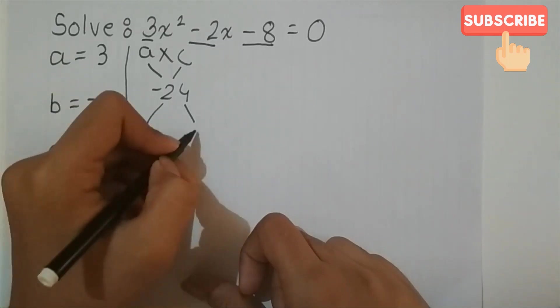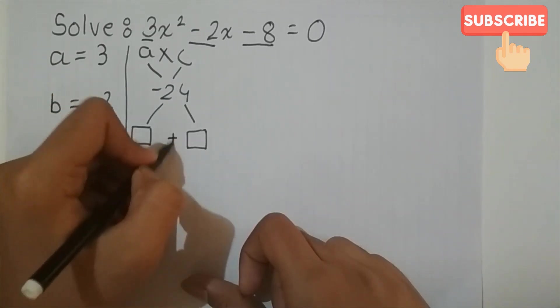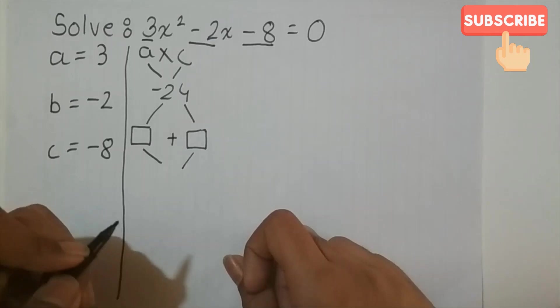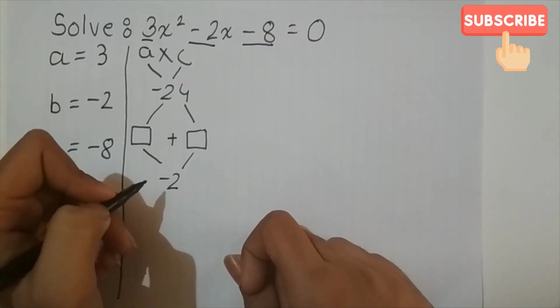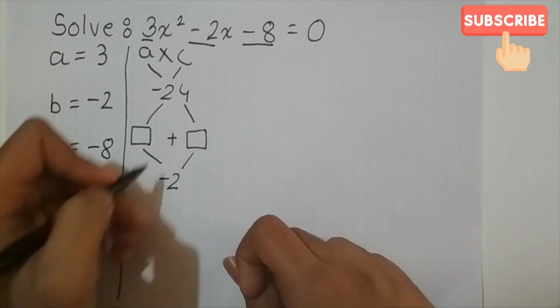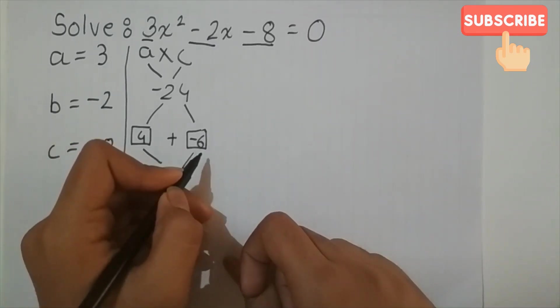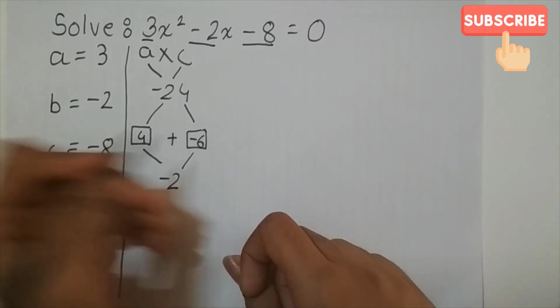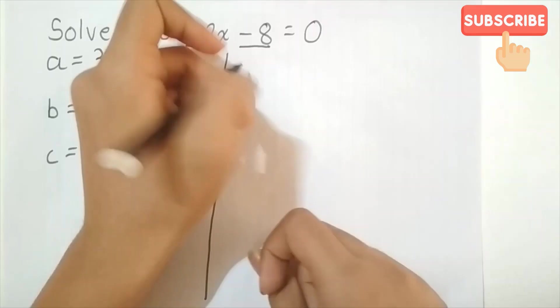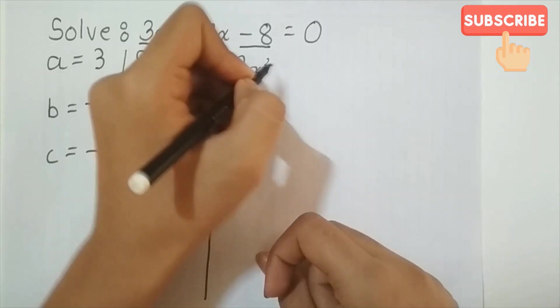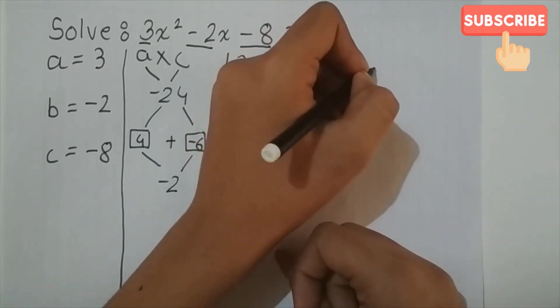And then we want a pair of numbers whose product will be minus 24 and their sum will give us b, that is minus 2. So one of them will be negative and the other will be positive, and they can be 4 and minus 6, because 4 into minus 6 is minus 24 and 4 minus 6 is minus 2 because plus into minus is minus.